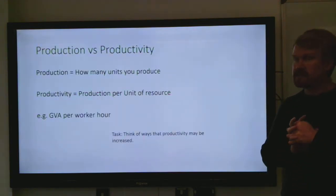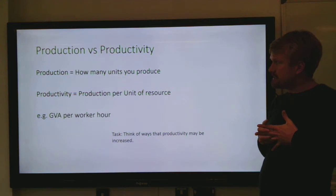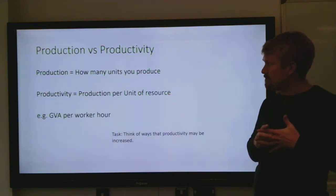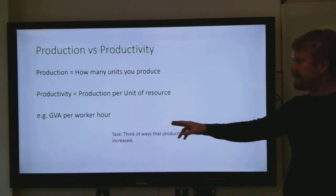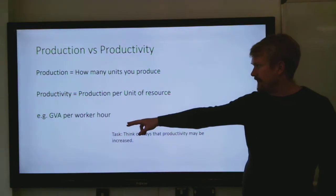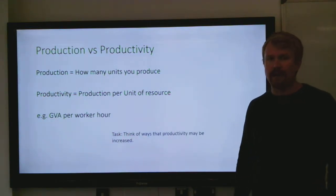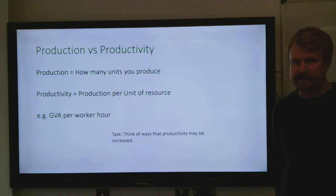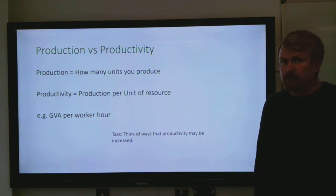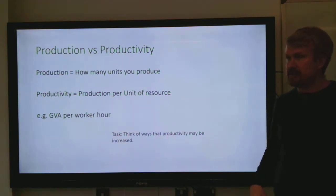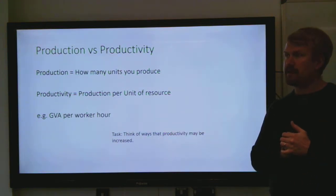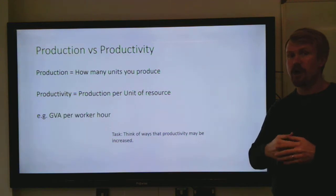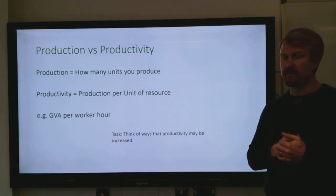Production versus productivity: production is how many units you produce. Productivity is your production per unit of resource. One way of expressing productivity is gross value added per worker hour. A good way of thinking about productivity is it's your output — which is production — divided by your inputs. So, how many units can you produce per worker is a good way of looking at that.